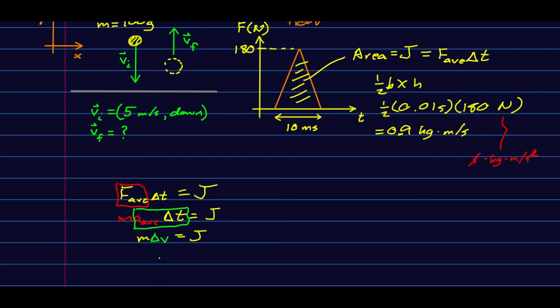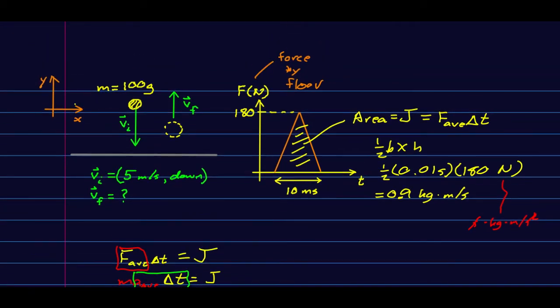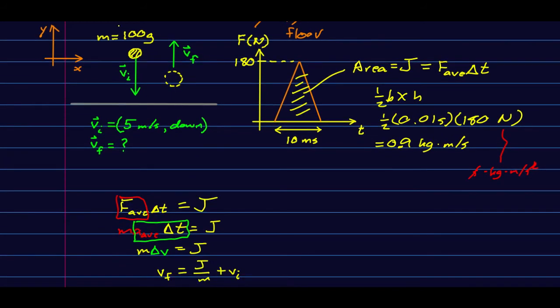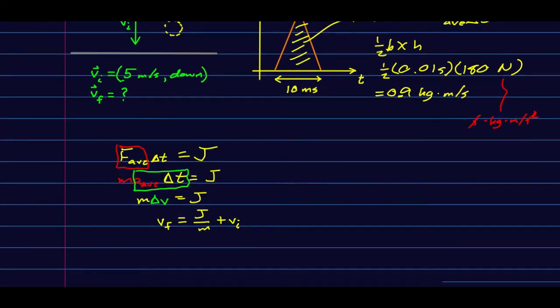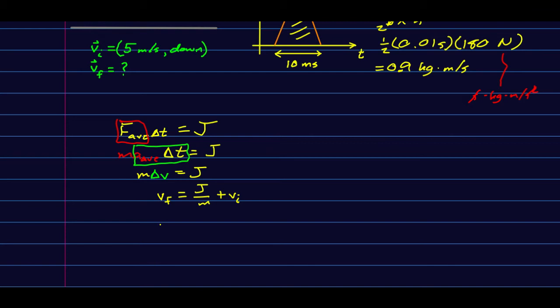Delta v is Vf minus Vi, so I can solve this. This is what you would come up with. Now note, I've made up positive, so this is a positive force—the floor pushing off the ball. Think about that, I'm being a little sneaky and ignoring something. And Vi is negative, five meters per second down.